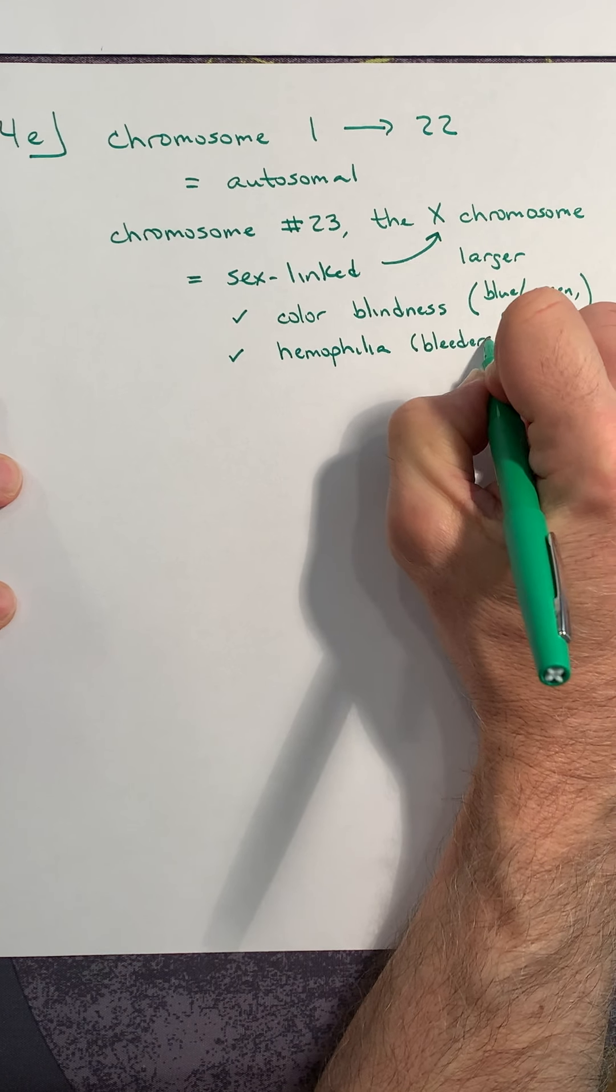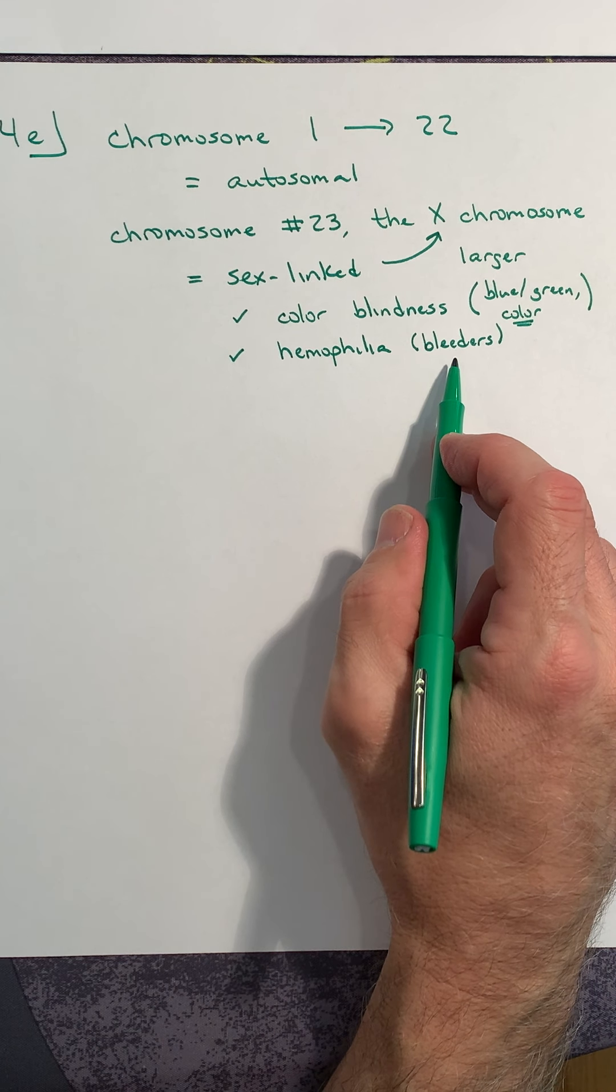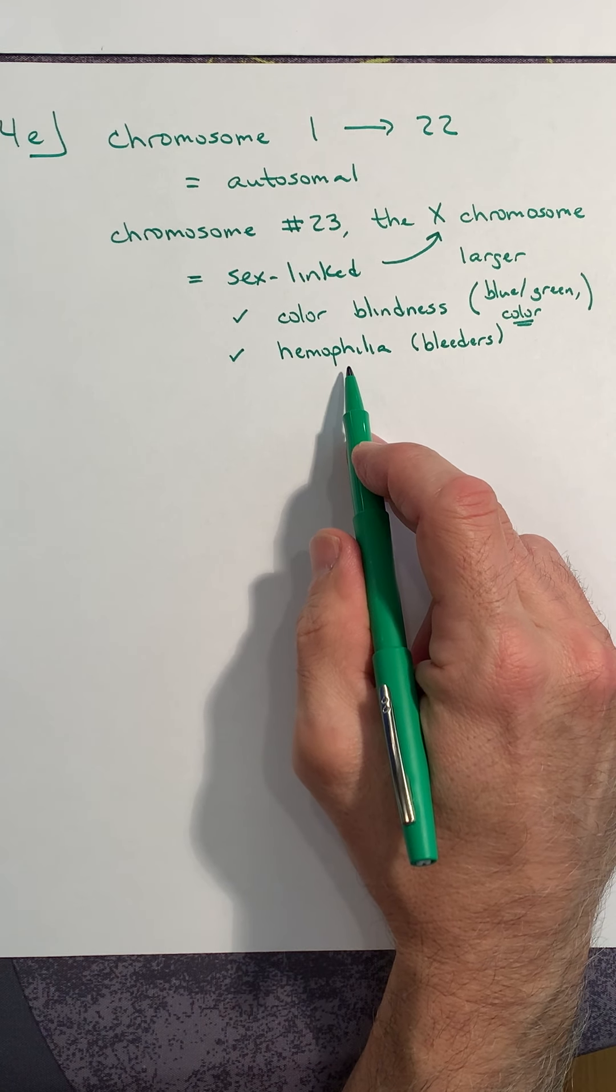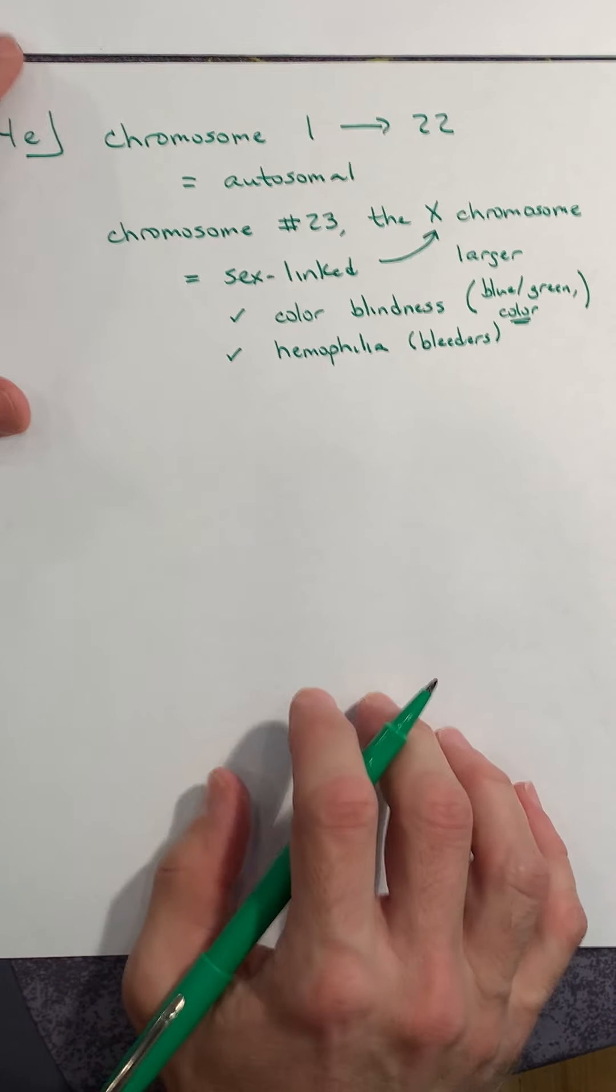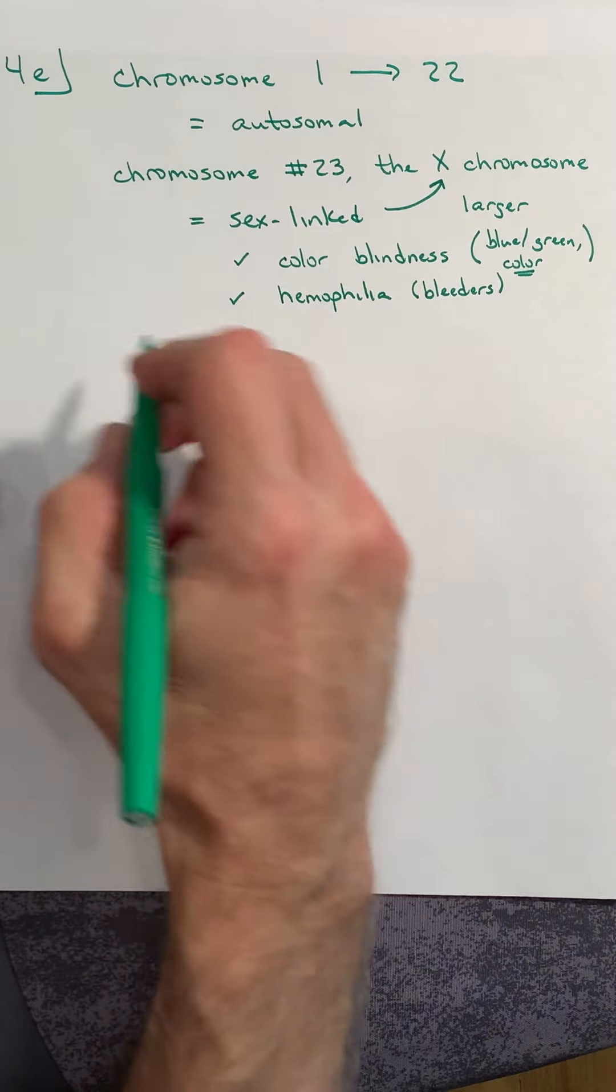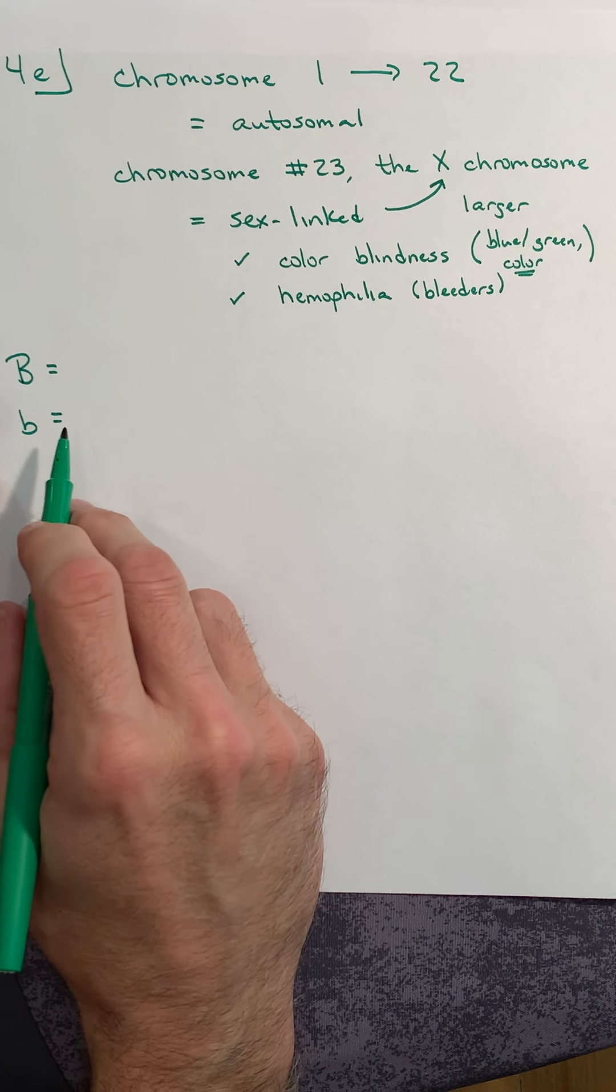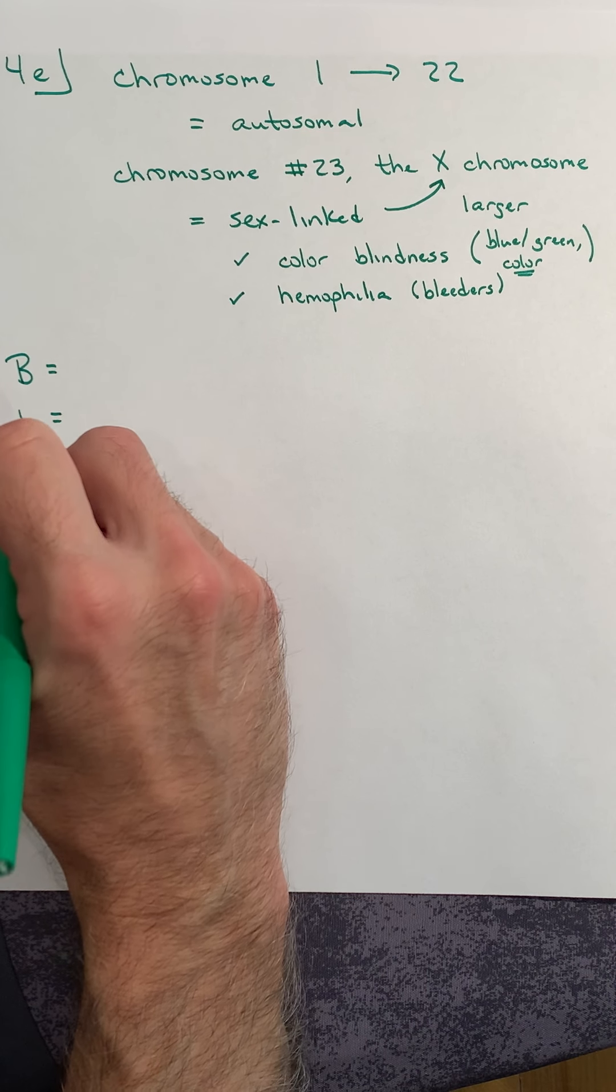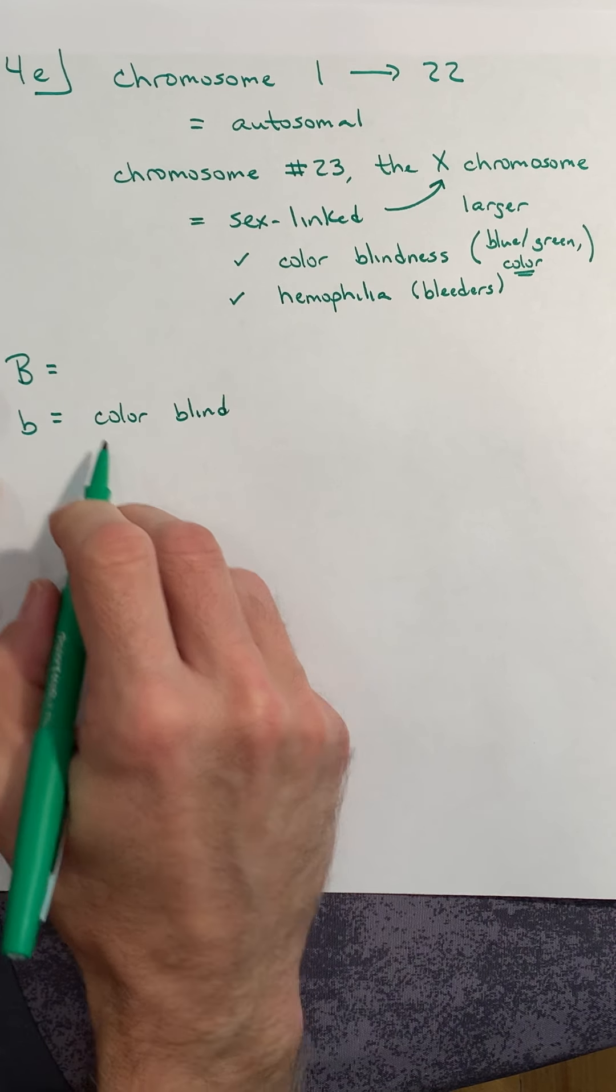There are different severities to hemophilia. Some people have a very serious case, and some have a very light case, so it really depends on the individual. As an example, I'm going to pick color blindness. I need to define my alleles always. This is a recessive disorder—both hemophilia and color blindness are recessive.